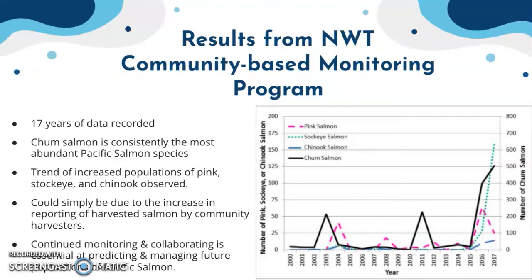From the data collected, four species were reported. Chum salmon is consistently the most abundant of the four and are observed to have reproducing populations in the Western Arctic. Certain levels show stable, low-level harvests, while higher harvests in 2011, 2013, 2016, and 2017 show an increasing trend in their population. For pink salmon, populations have also been on the rise, mostly during even calendar years — so roughly every second year — and they have been spotted further up the Mackenzie at Fort Good Hope, which is closer to the Arctic Ocean.